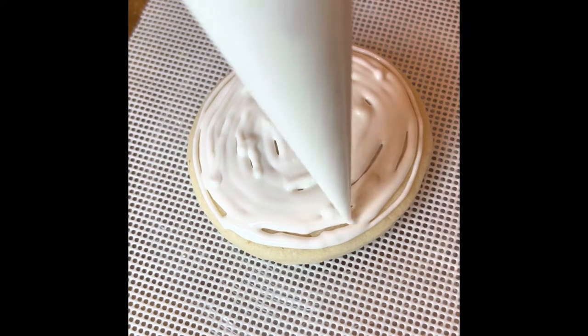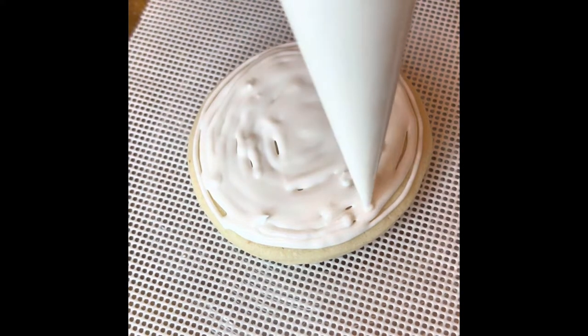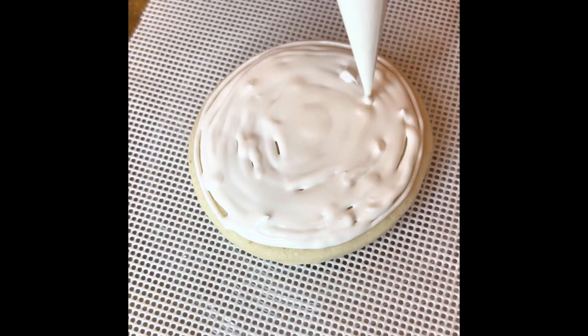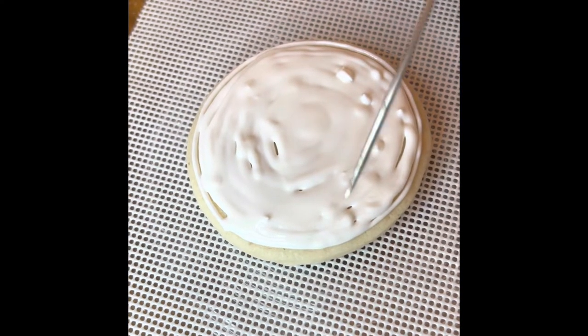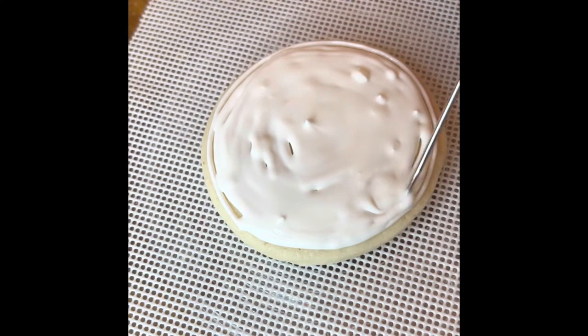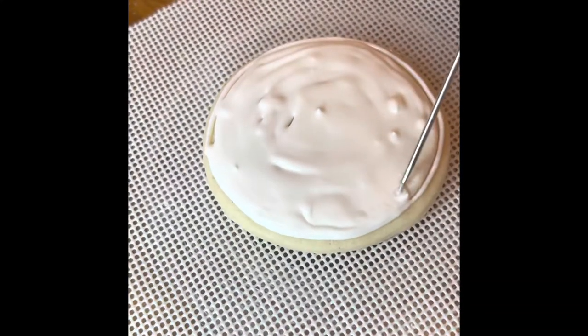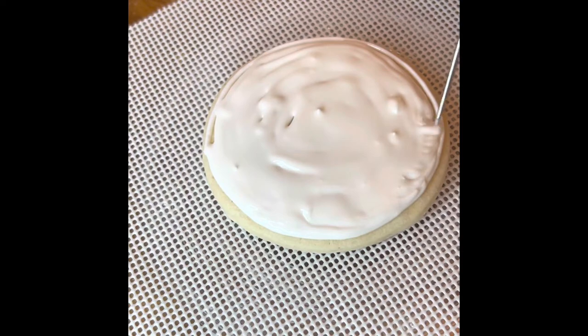I like to use a scribe to really fill in those extra spots and to make sure that it's thick enough so you don't have any craters. So that's what you'll see me doing here. I'm spreading it out, making sure all those areas have enough icing and then filling in where needed.